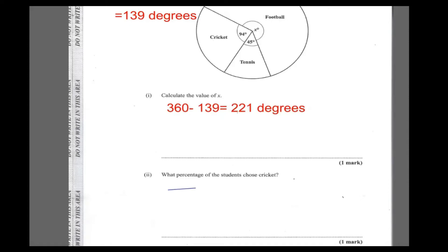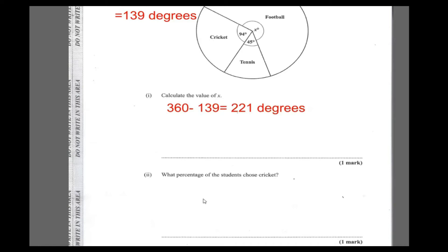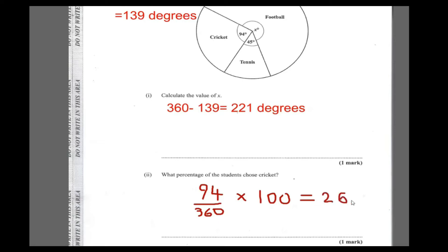We're saying 94 out of 360 — but wait, it's asking for a percentage, not the total amount of students. So multiply it by 100 to get the percentage. This is equal to 94 divided by 360 times 100, which is 26.1. So 26.1 percent of the students chose cricket as their favorite sport.